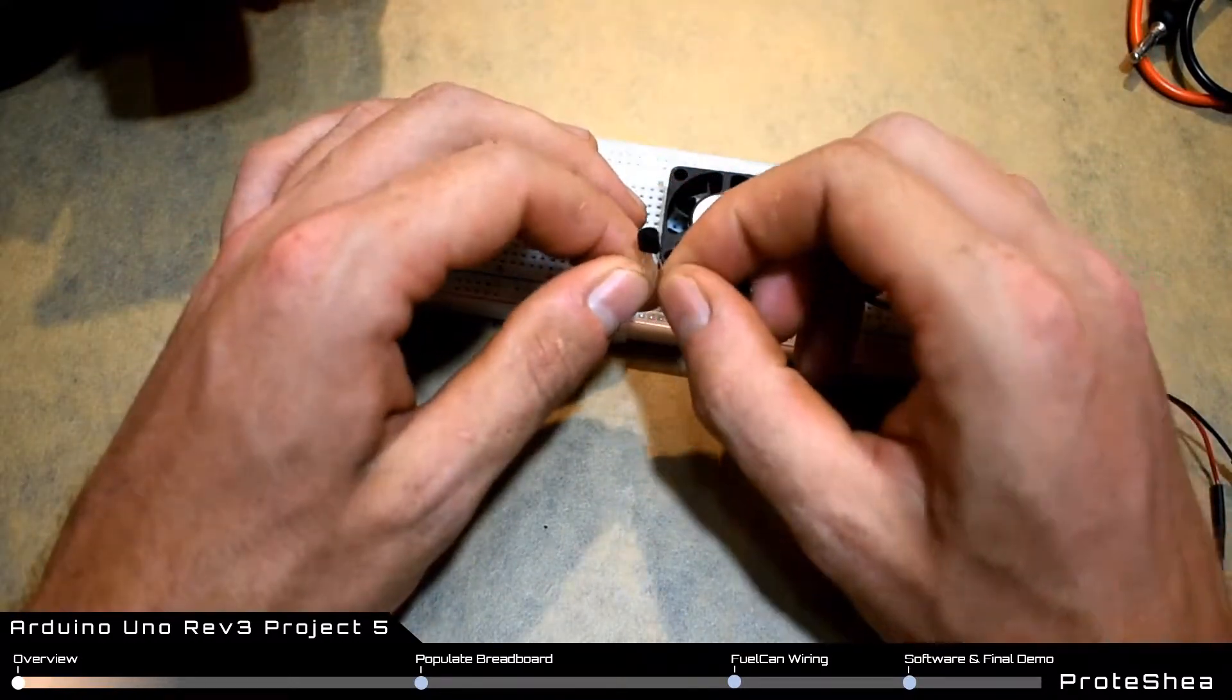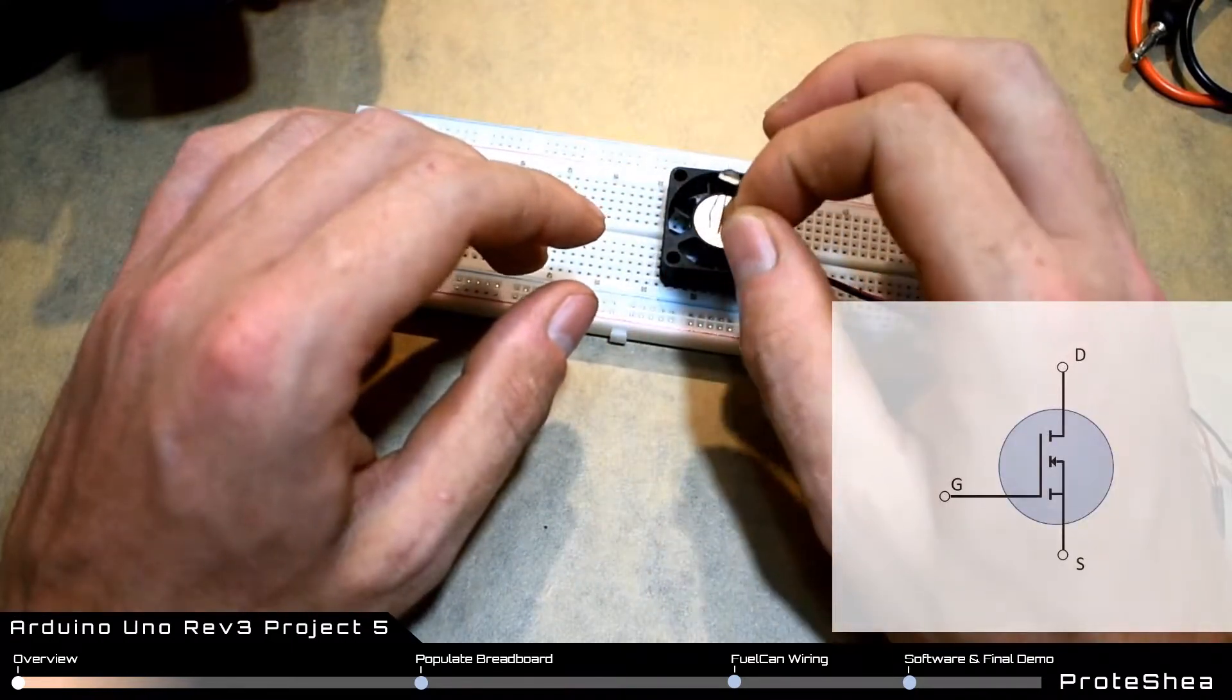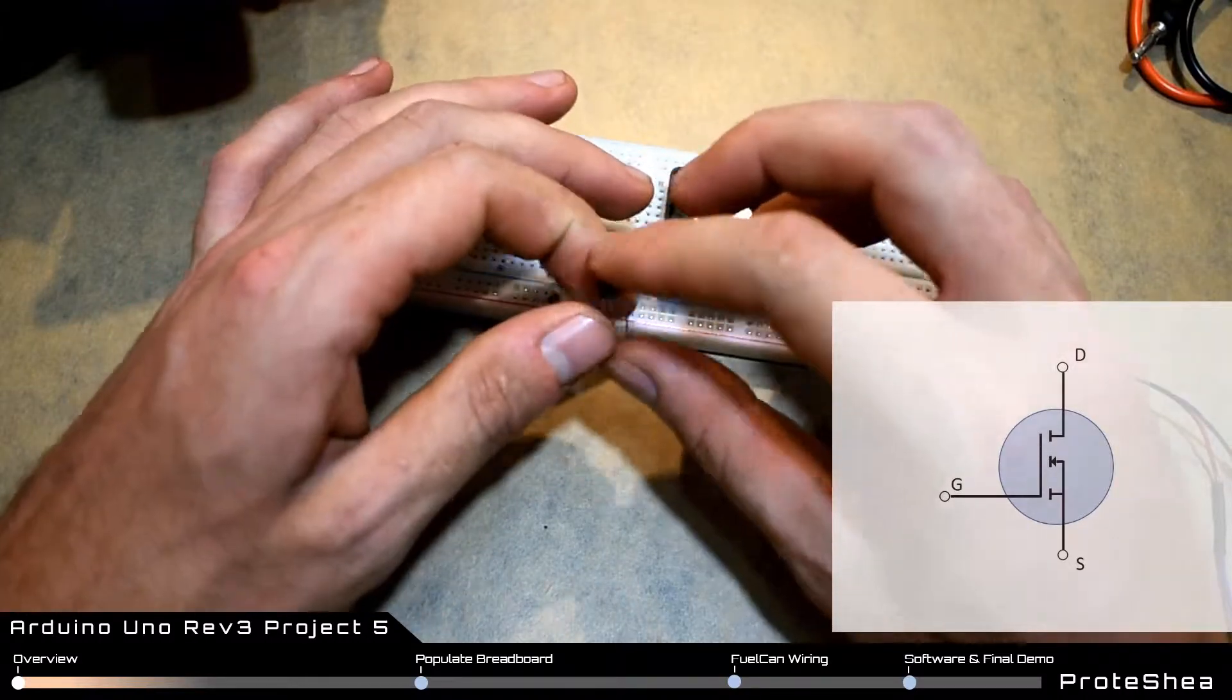The n-channel MOSFET is a three-pin device consisting of a source pin, a gate pin, and a drain.